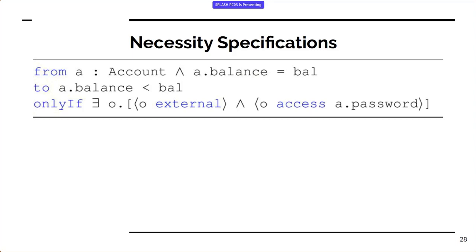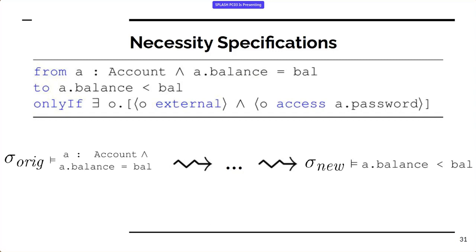Let me give a bit more detail on the actual semantics. What this means is: if we start in a program state sigma-original where we have an account A with a balance 'bal', and after any arbitrary number of execution steps we end up in sigma-new where the balance has been reduced, then in the original program state there must have been some external object that had access to the password.